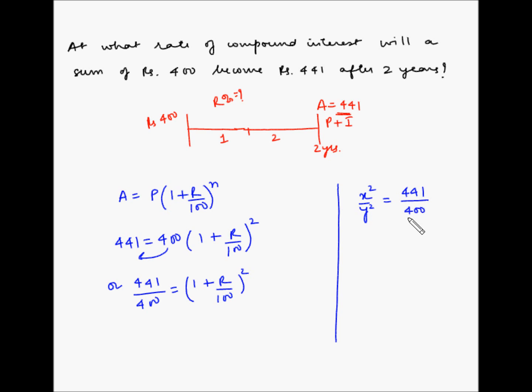But by just observation we can easily say that these numbers are 21 square by 20 square. 20 square is easy - 400. You know, 20 multiplied by 20: two 2's are 4 and two 0's, 400.